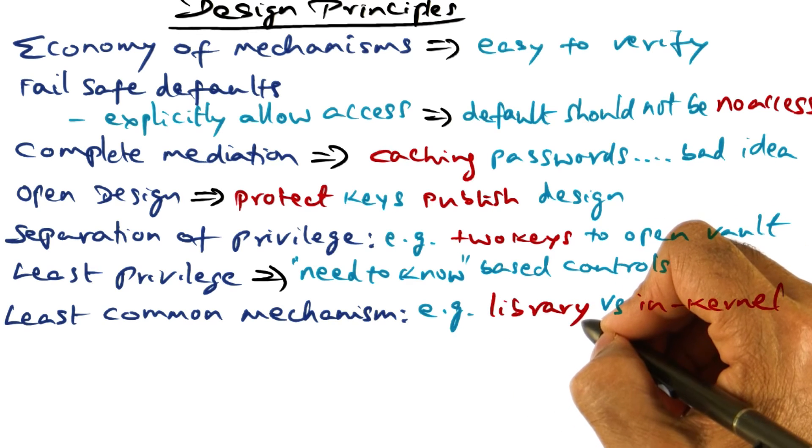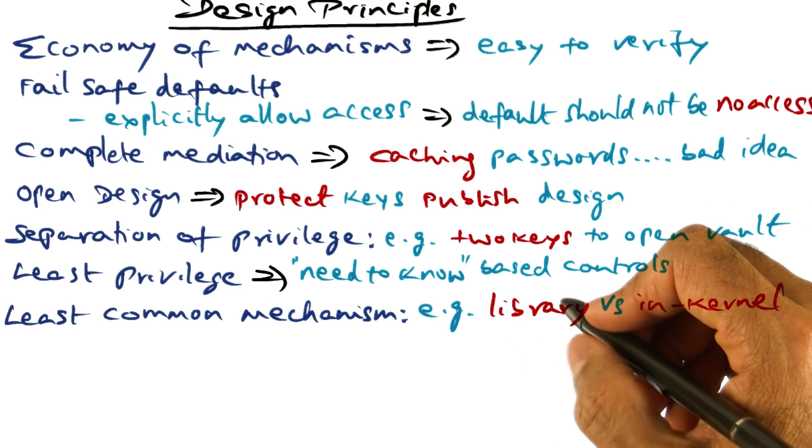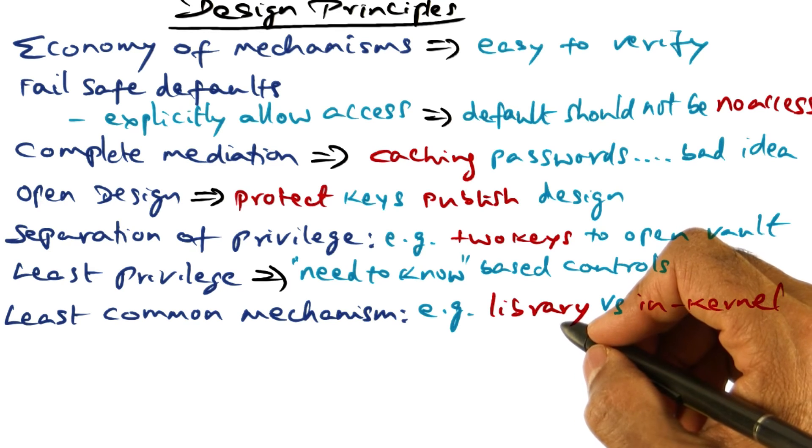Then you can limit the amount of damage a malfunctioning mechanism can do to the system as a whole. So that's the idea behind least common mechanism.